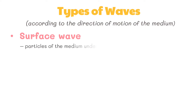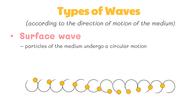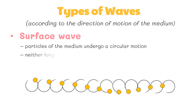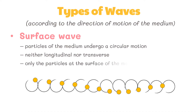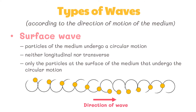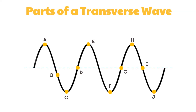A surface wave is a wave in which particles of the medium undergo a circular motion. Surface waves are neither longitudinal nor transverse. In longitudinal and transverse waves, all the particles in the entire bulk of the medium move in a parallel and a perpendicular direction, respectively, relative to the direction of energy transport. In a surface wave, it is only the particles at the surface of the medium that undergo the circular motion. The motion of particles tends to decrease as one proceeds further from the surface.